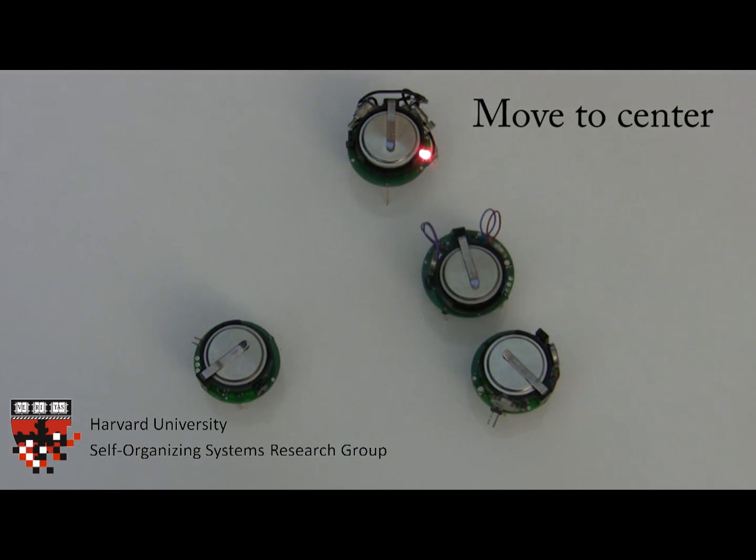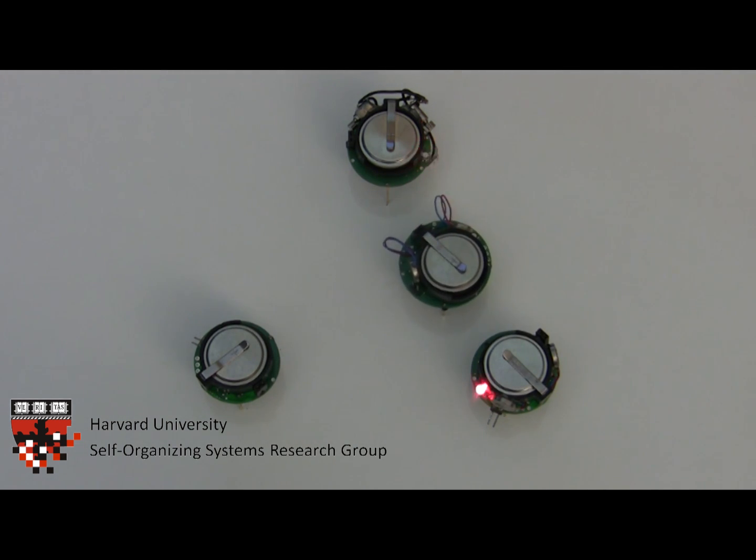In a second demonstration, a robot is tasked to move to the center of three stationary neighbors. Each of these neighbors are transmitting messages, which allow the moving robot to measure its distance to each neighbor.